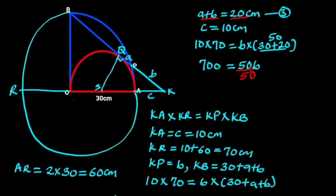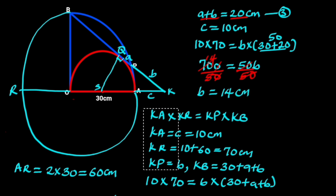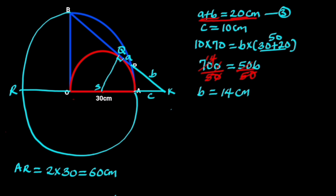To find b, we divide both sides by 50: b equals 700 divided by 50, which is 14. Hence b equals 14 centimeters. Substituting b equals 14 into equation 3: a plus 14 equals 20. Collecting like terms: a equals 20 minus 14, which is 6 centimeters.